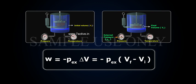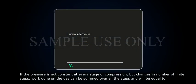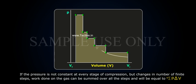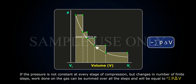If the pressure is not constant at every stage of compression, but changes in number of finite steps, work done on the gas can be summed over all the steps and will be equal to minus sigma P delta V.